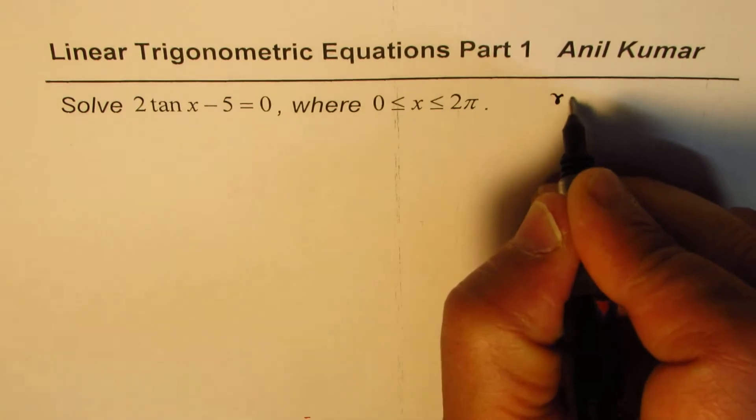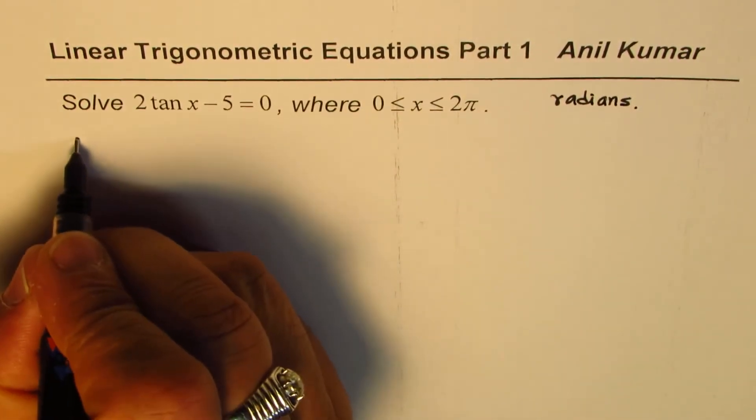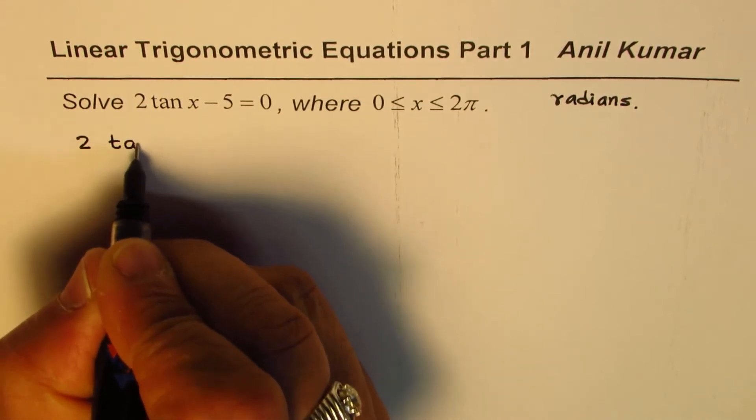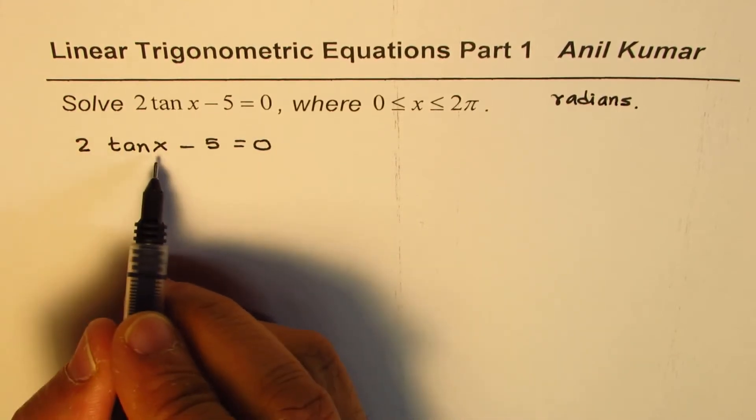We are working in radians. So let's rewrite the question: 2 tan x minus 5 equal to 0. Let's solve for tan x.